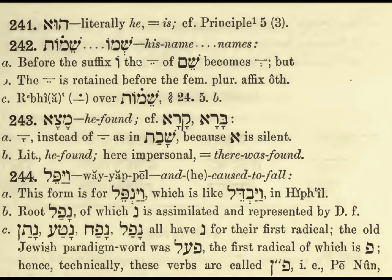Shemot, meaning 'his name' and 'names.' Before the suffix, the Patah of Shem becomes a Shwa. The vowel is retained before the feminine plural suffix, so Shemot here but not Shemot elsewhere. The Ribinga accent over Shemot is an accent to pay attention to.